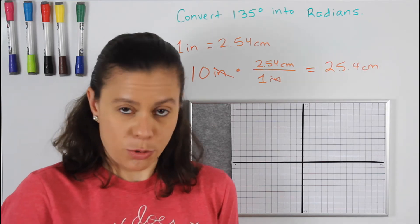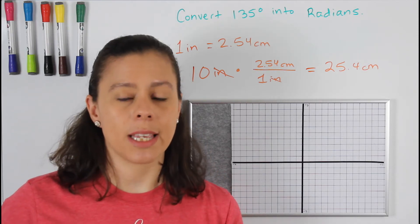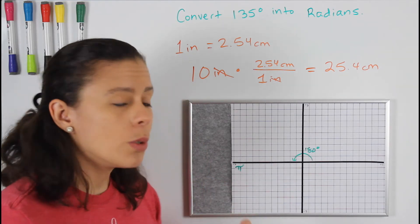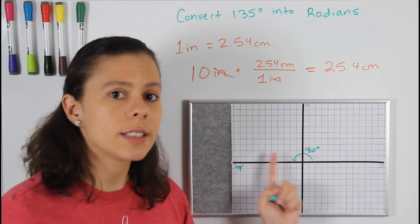Well, simple: pi is the exact same thing as 180 degrees. So what we're going to do is use that as a ratio—180 degrees is the same thing as pi.